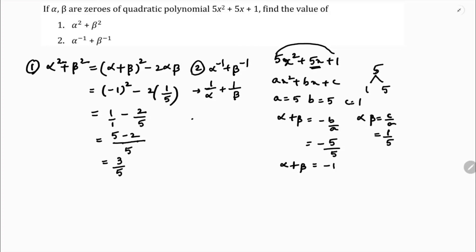If you take LCM, alpha beta, then beta plus alpha. Because here you have alpha, so you need to multiply beta. Here you have beta, so you should multiply alpha.